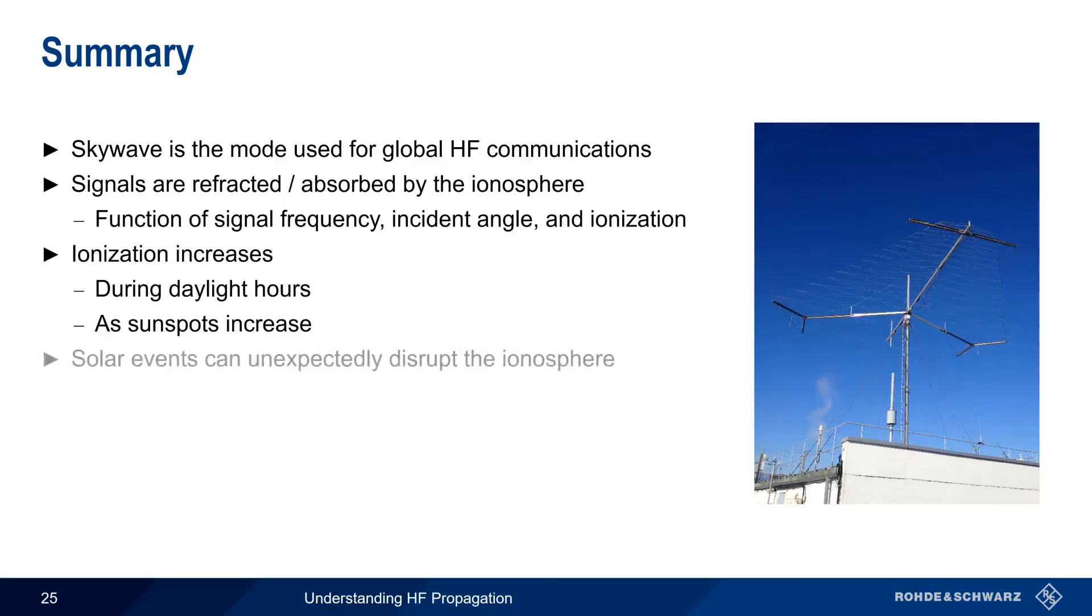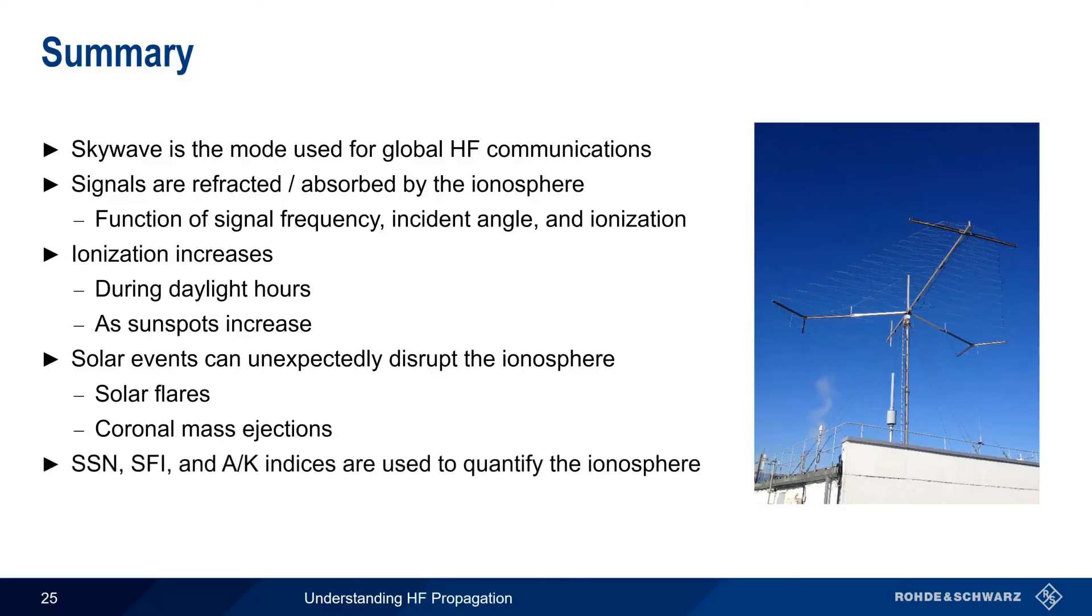Aside from these semi-regular effects, certain types of solar events can unexpectedly or unpredictably disrupt the ionosphere and hence HF propagation. Solar flares are the most common of these, and flares can lead to so-called sudden ionospheric disturbances, polar cap absorption, and both geomagnetic and ionospheric storms. Coronal mass ejections are less common, but often a more severe source of geomagnetic storms. And finally, we can quantify the current state of the ionosphere and/or make predictions about HF propagation based on measurements such as sunspot number, solar flux index, and the A and K magnetic indices.